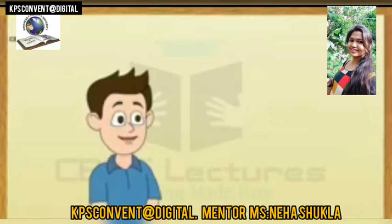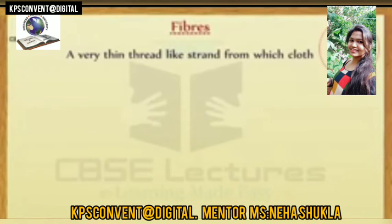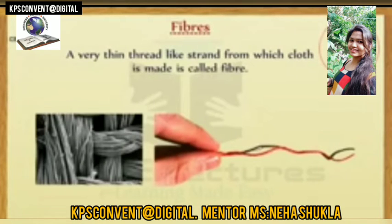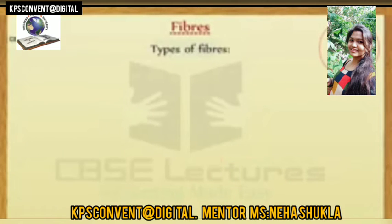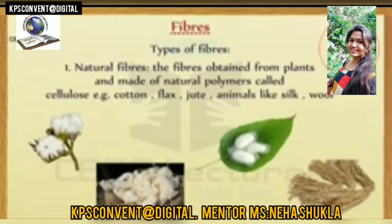What are fibers? A very thin thread-like strand from which cloth is made is called fiber. We have two types of fiber. Natural fibers are the fibers which are obtained from plants and are made up of natural polymer and cellulose. They are called natural fibers.